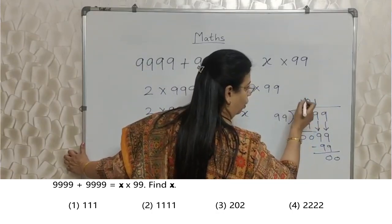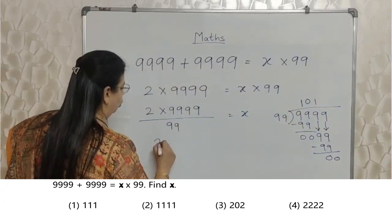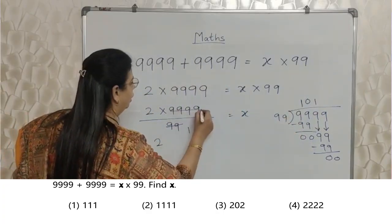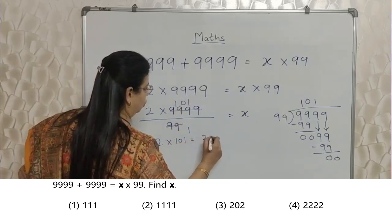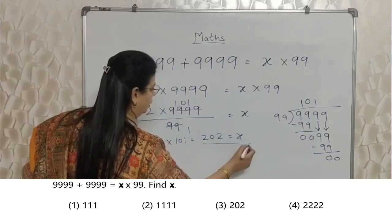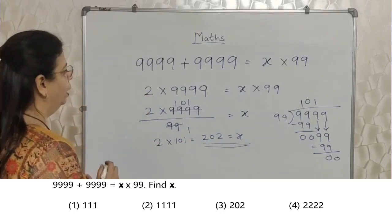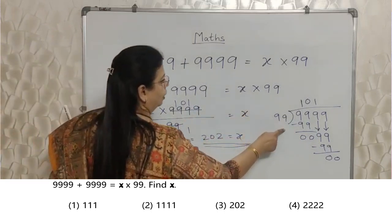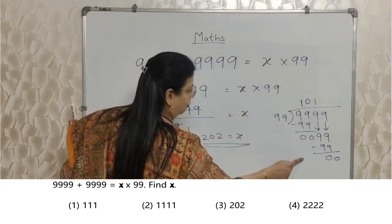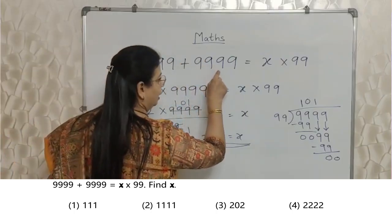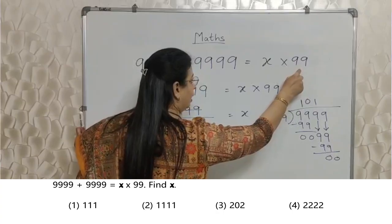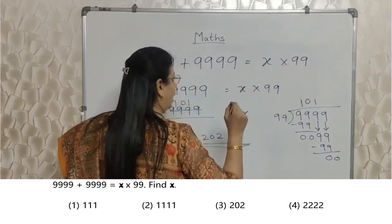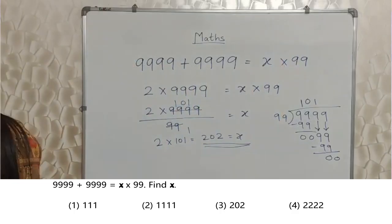11 is not same as 101. So this 0 plays a very very important role here. 2 mein ye division likh dete hai, 101. So 2 into 101 bacha hai, that is 202 that is equal to x. This is the answer. One small division. This is very easy division. Chalo, aage vartte hai.